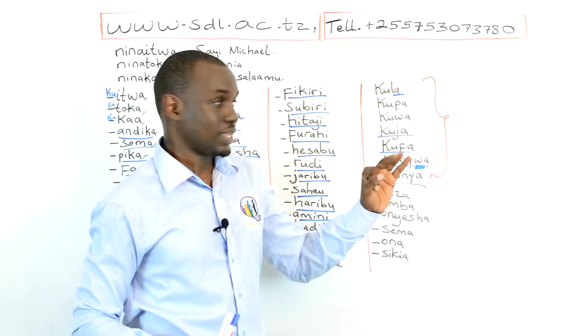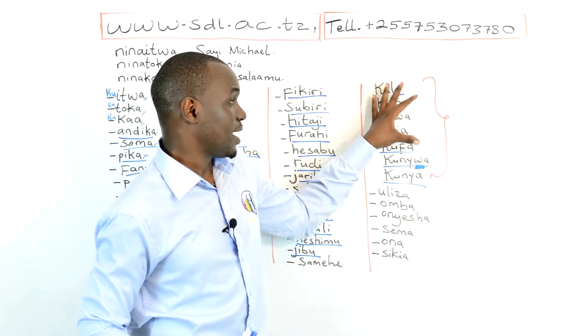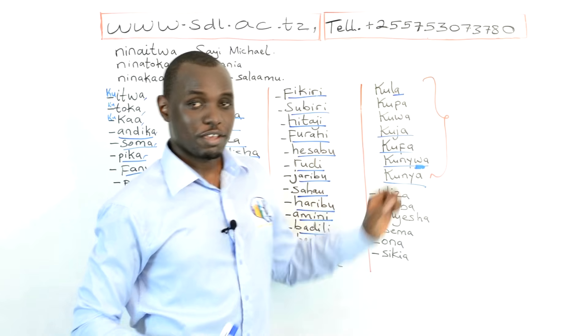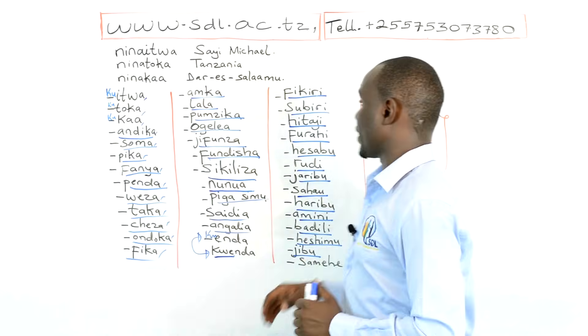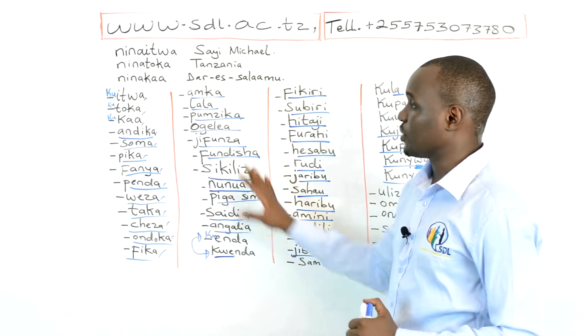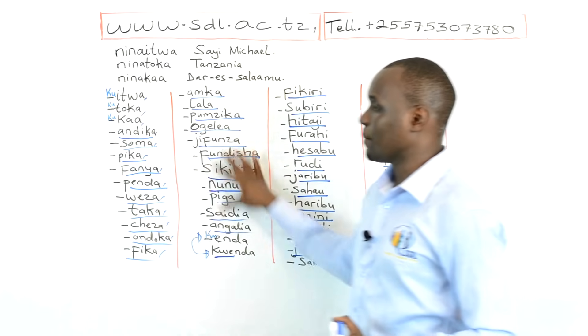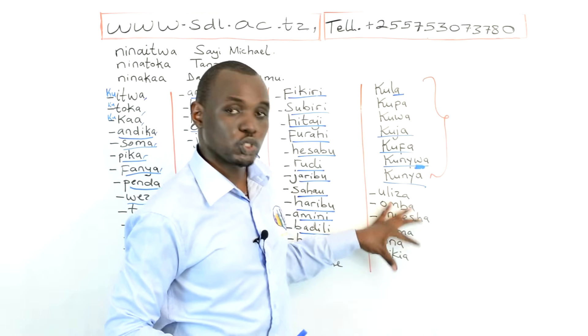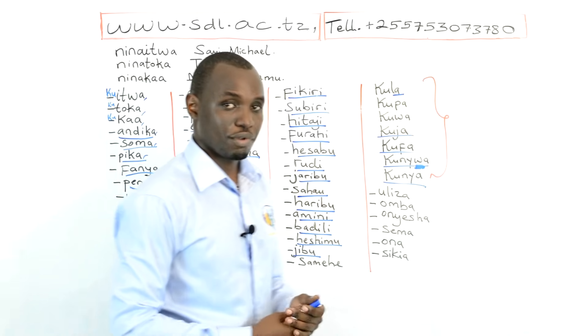So we have three groups of verbs in Swahili: we have monosyllabic verbs, we have Arabic verbs, and we have Bantu verbs.